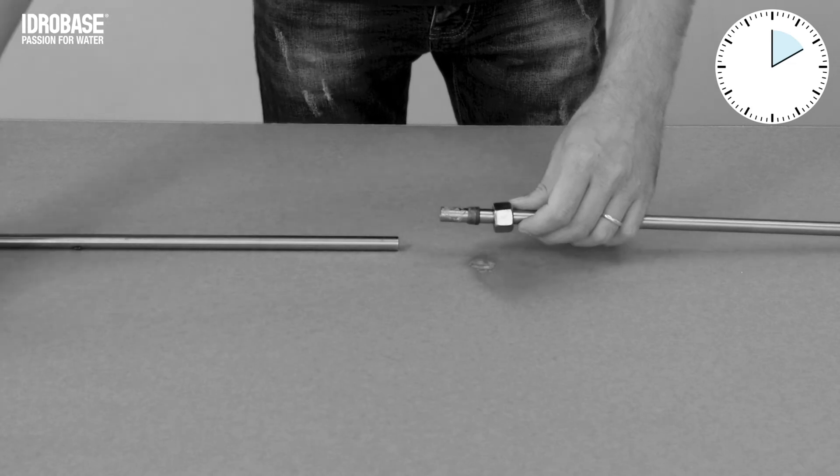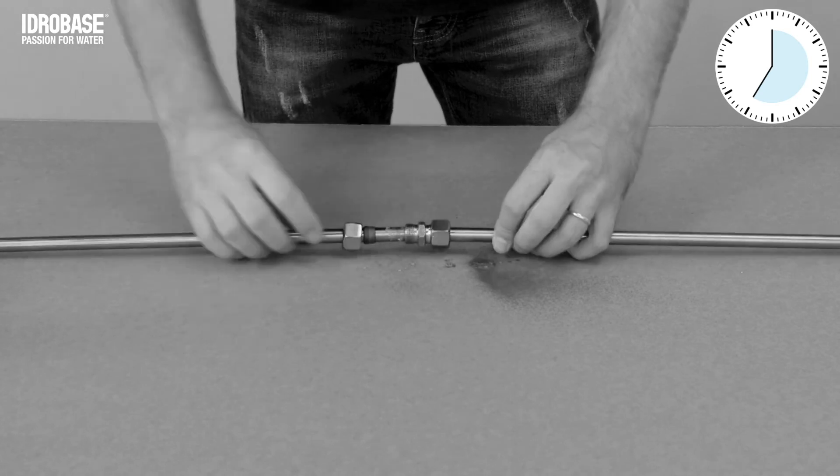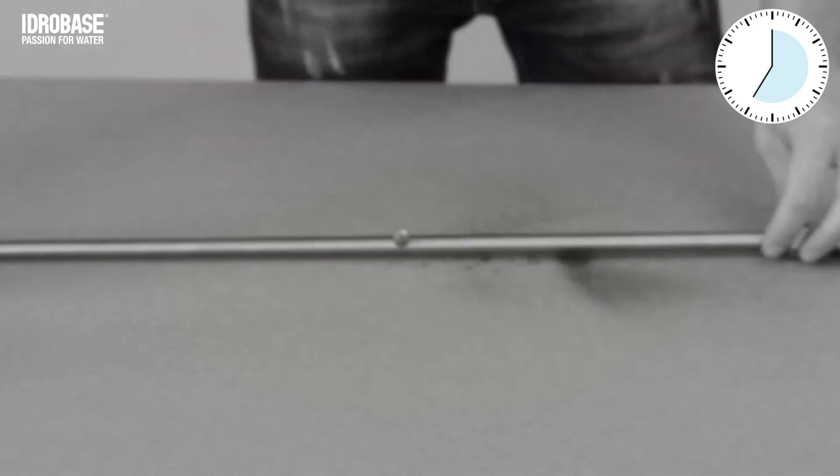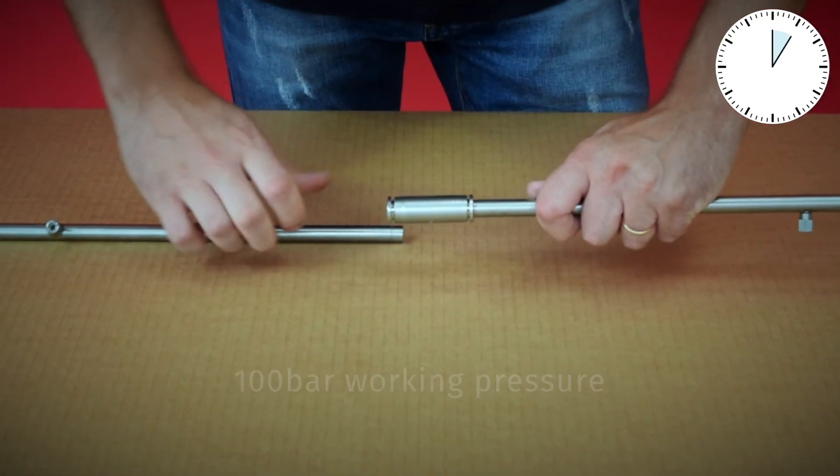To assemble 60 meters of pipes with 3-meter bars, the time required with the traditional system using compression fittings is 35 minutes. With the new system using sliplock fittings: 5 minutes.